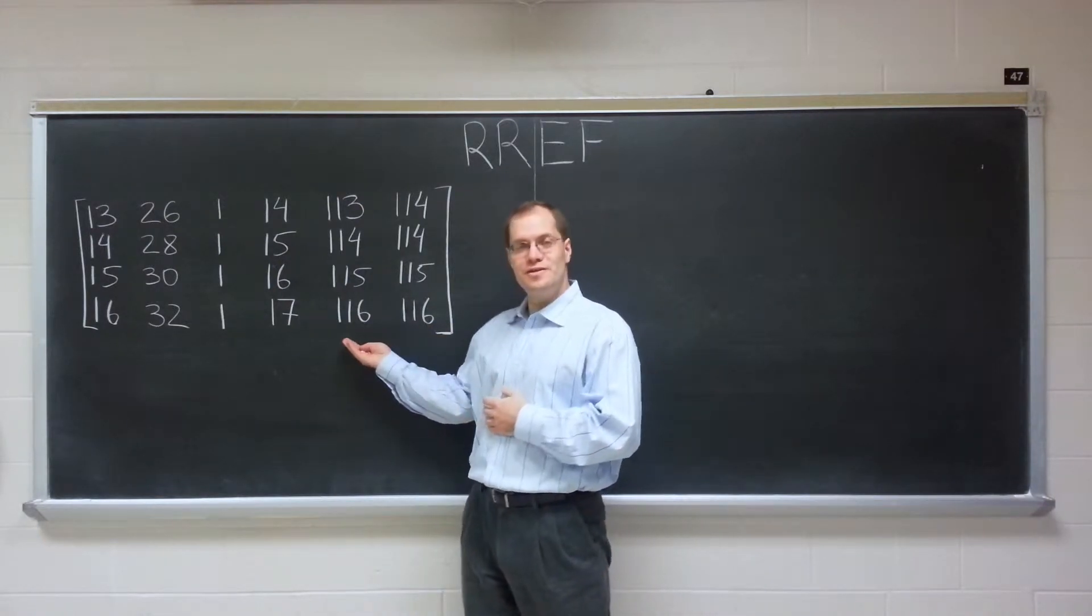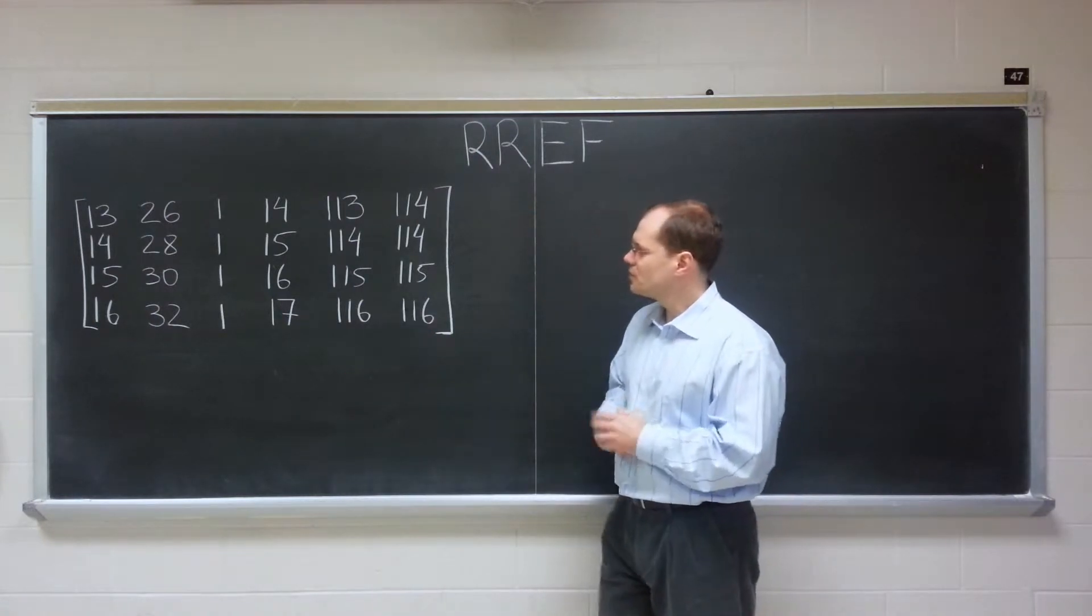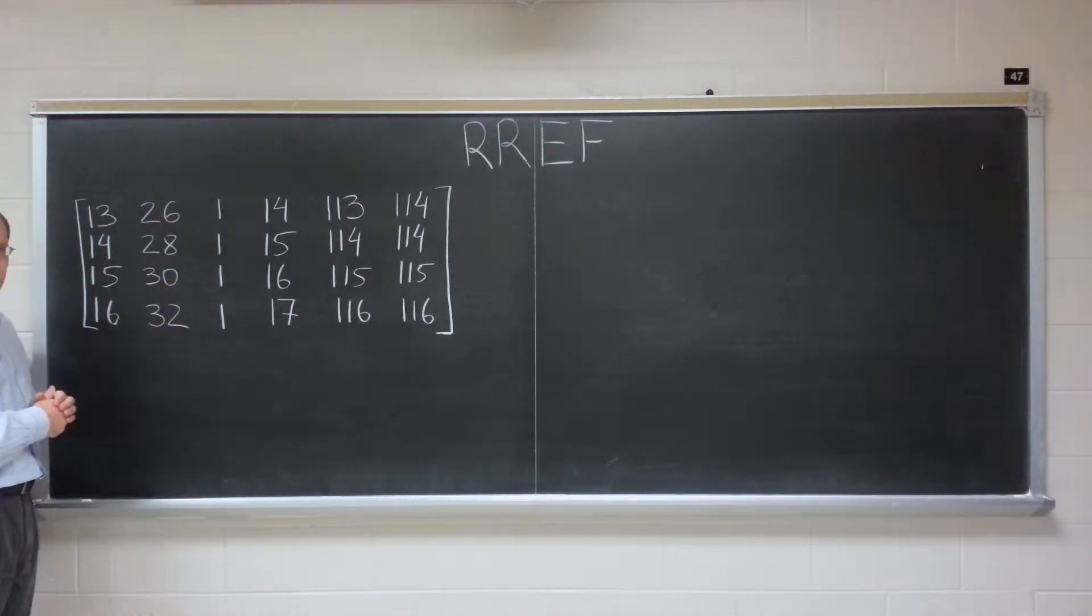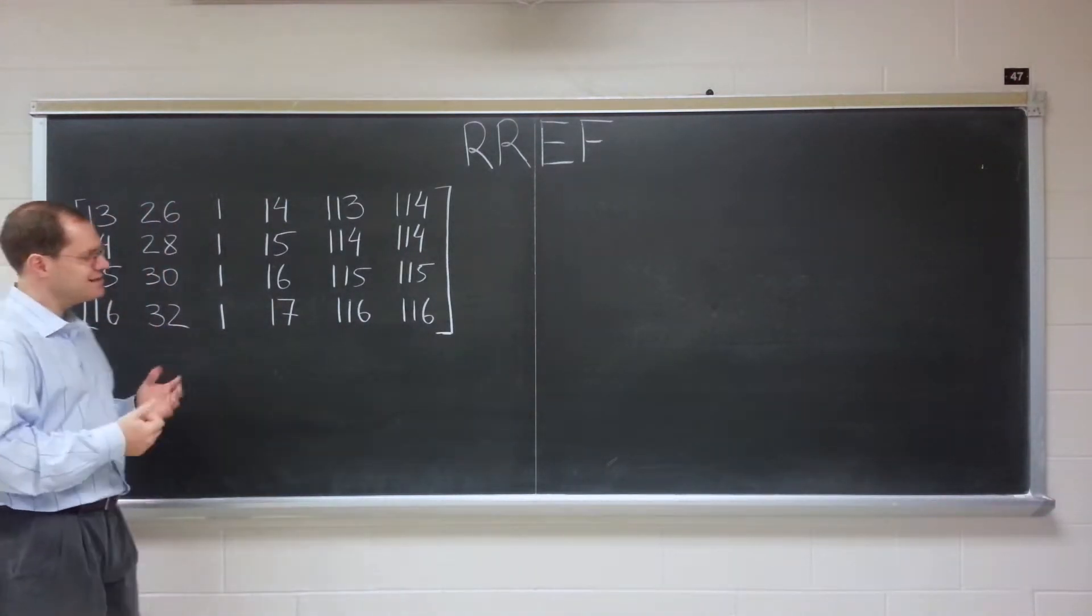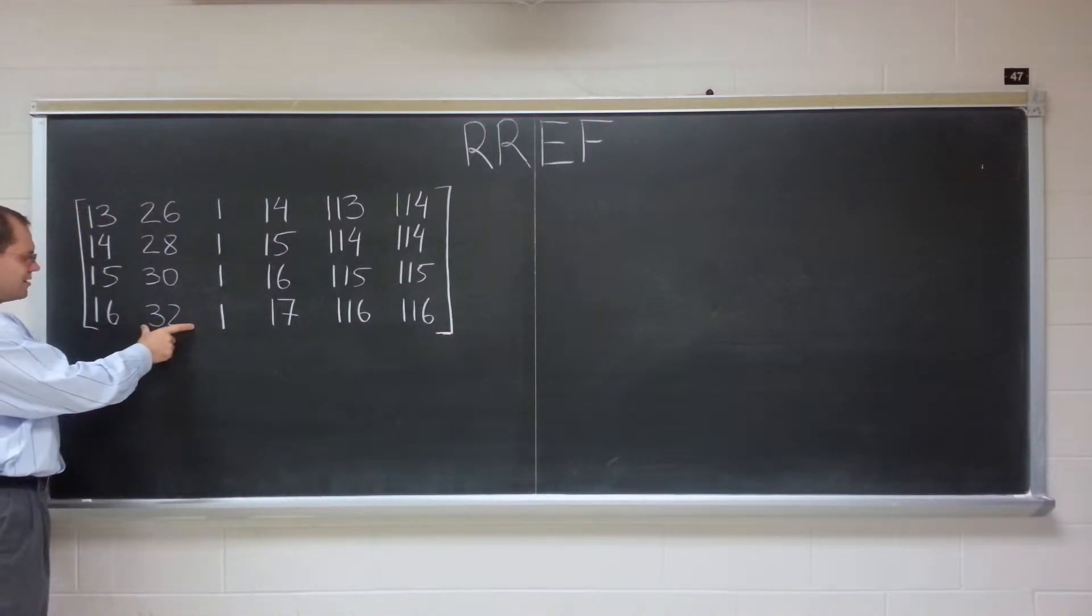At which point the purpose of the row reduced echelon form would be diminished, because there's no use in determining it if you already know the relationship among the columns. You would only do it in order to find out what that relationship is. So that's why it's more of a novelty problem than a problem with real applications, yet it's insightful.